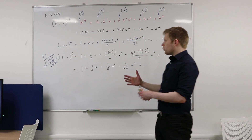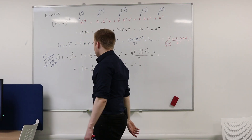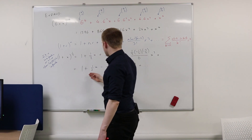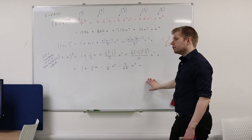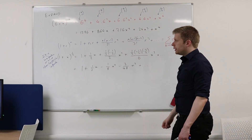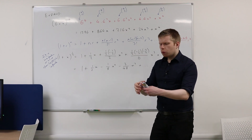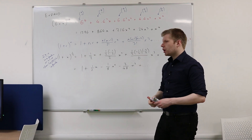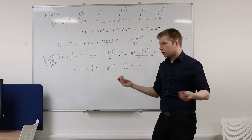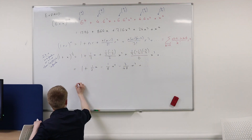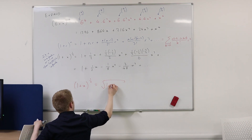So you might have, for example, a situation which says: take 1 plus x to the power of a half, and find the first four terms of this expansion — you would end up with something like this. Now here's my question. What I'm literally doing here — raising something to the power of a half — what does that actually mean? How else could I write raising something to the power of a half? Square rooting. If I take 1 plus x and I raise it to the power of a half, that is the same as taking the square root of 1 plus x.